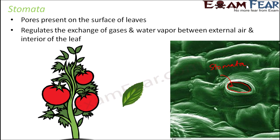Stomata regulate the exchange of gases — that is their primary function — and also regulate water vapor between external air and the interior of the leaf. All excess water present within the leaf is also thrown out through these stomata, so it maintains the right amount of water within the leaf.